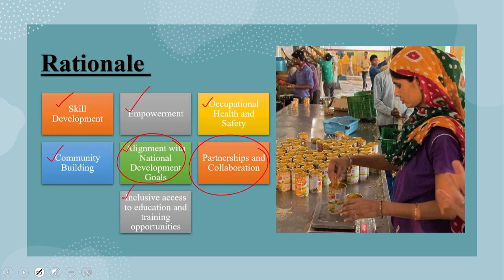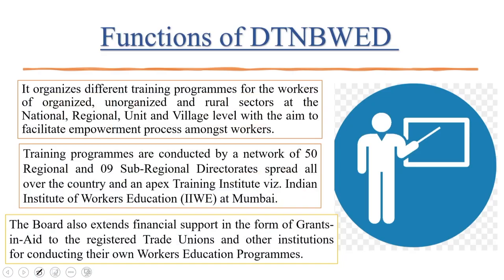When looking into the functions of DTNBWED, the foremost is that it organizes different training programs for workers of organized, unorganized, and rural sectors. The government of India makes a clear distinction between these sectors and brings them under one umbrella for training at national, regional, unit, and village levels — with the aim to facilitate the empowerment process among workers.